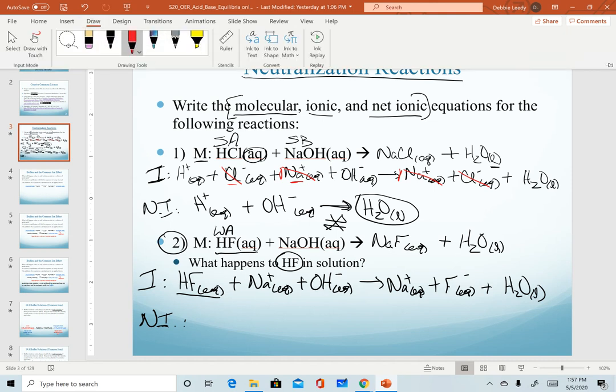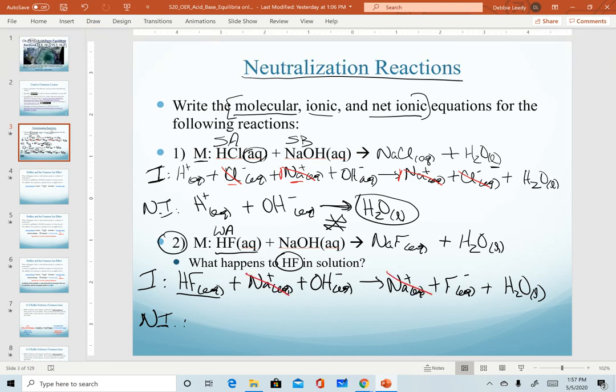To get to our net ionic equation, we still go through the same steps. We still need to cancel out our spectator ions. Notice here that the sodium ion is the only spectator. And so our net ionic equation is actually going to show the reaction between hydrofluoric acid and a hydroxide ion. Notice here at the end of our net ionic equation that it is still balanced. We balance for atoms and charges. So we have two hydrogens, one fluorine, one oxygen. On the product side, we have two hydrogens, one oxygen, one fluorine. Notice our charges also balance. On the reactant side, we have a total of a negative one. Remember that hydrofluoric acid is a neutral molecule, so no net charge there. On the product side, we have the negative one charge from our fluoride ion. And so we are balanced for atoms and for charges.